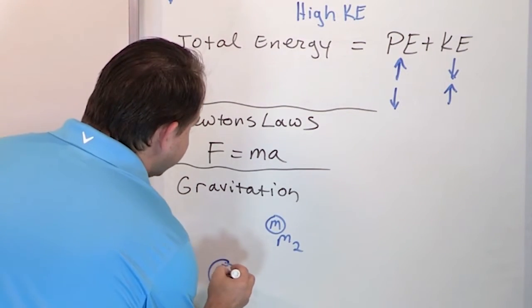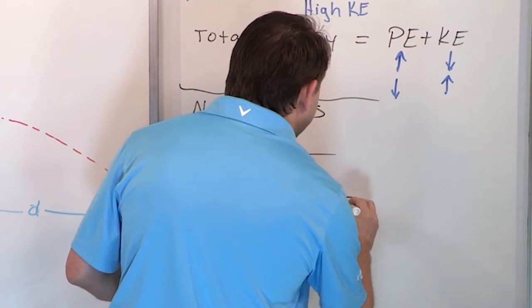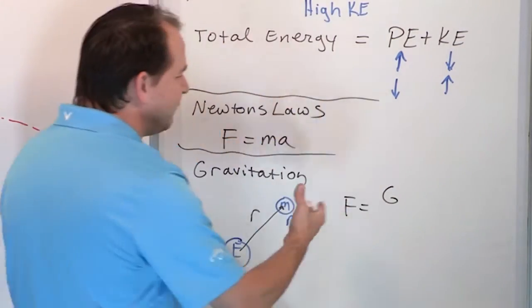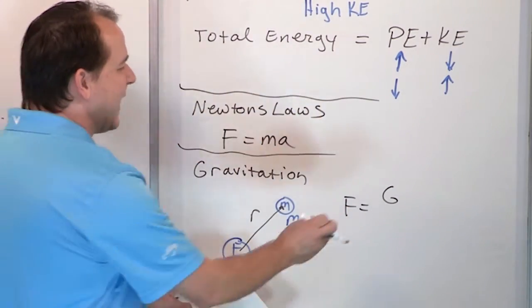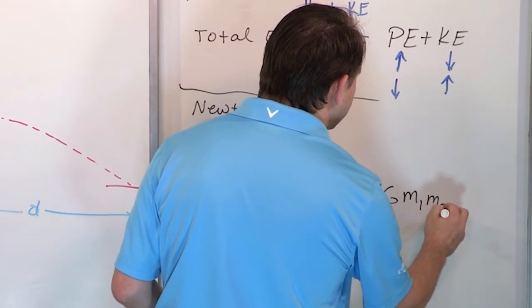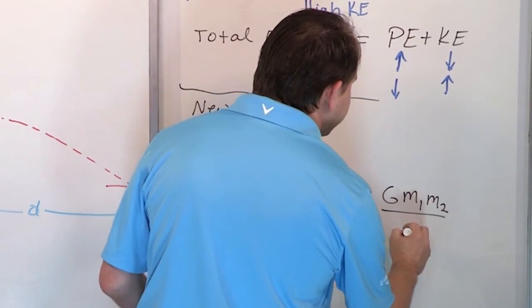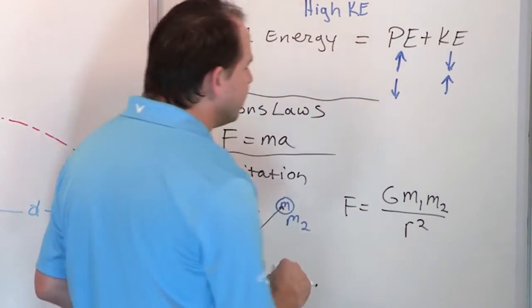And that force, if the distance between these two things we call R, that force of gravity is equal to some number G, which we'll talk about. It's called the gravitational constant. Times mass 1 times mass 2, so we're multiplying all the masses together times G, this number. And on the bottom it's the distance between them but squared.